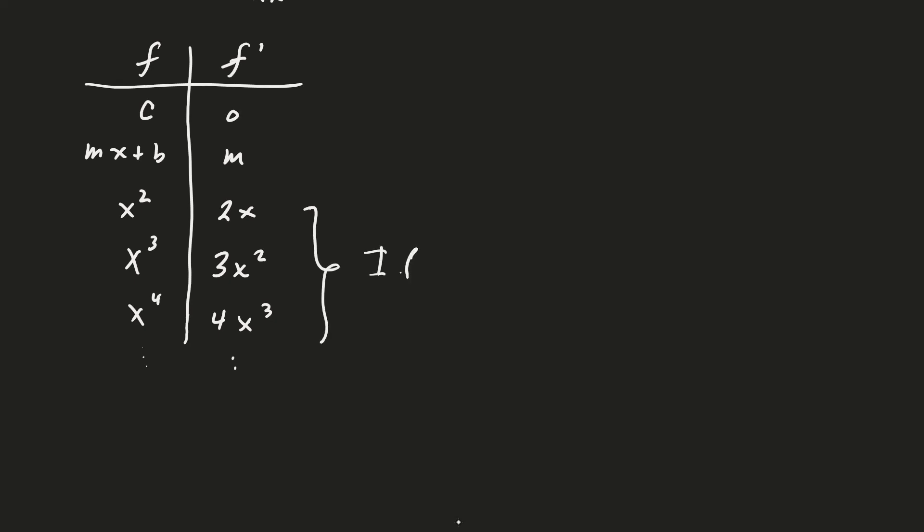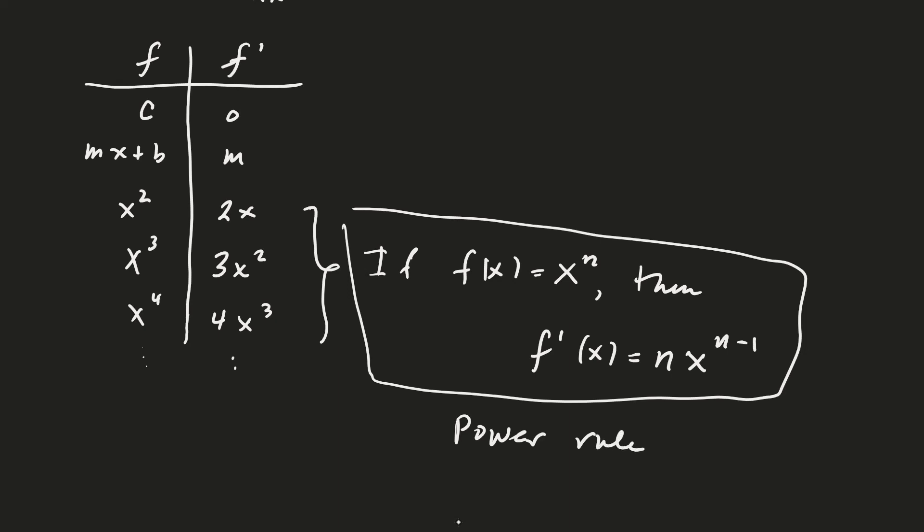If f(x) = xⁿ, then what is f'(x)? You can see that n comes down in front from the exponent, and then we have x^(n-1). This is the power rule: if f(x) = xⁿ, then f'(x) = nx^(n-1).